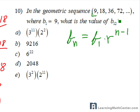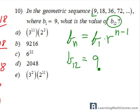We're looking for the twelfth term of the sequence. So we have b(12) is going to be equal to b(1), which is 9, times r to the n minus 1 power. Now what is r? R is the common ratio of the sequence — the constant ratio being multiplied from term to term.